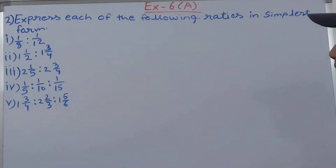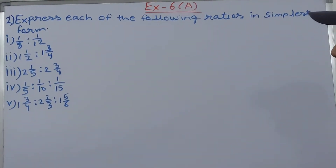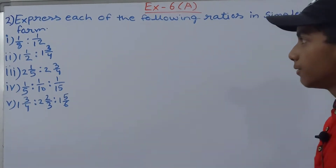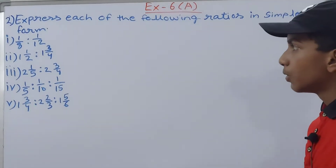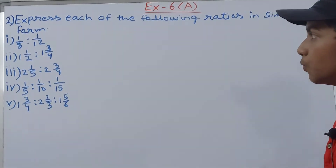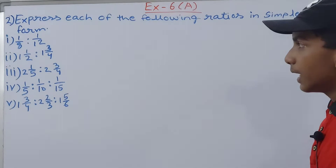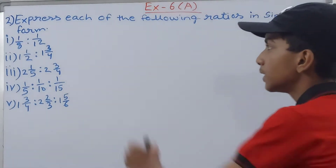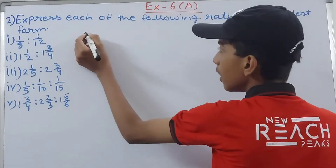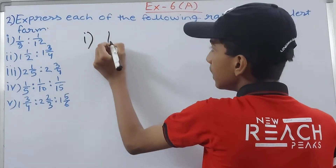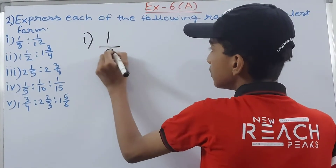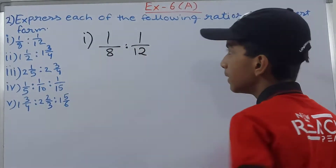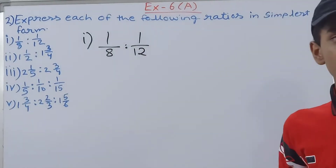Question 2 says: express each of the following ratios in simplest form. We have 1/8 : 1/12, then 1 whole 1/2 : 1 whole 3/4, and so on. The first part is 1/8 : 1/12.